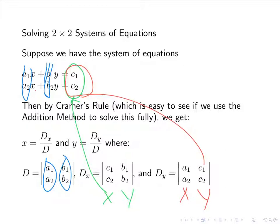So we replace whatever variable's column with the right-hand side of the equations, and every other variable keeps its original coefficients from D. For Dy, the y column becomes the right-hand side and the x column stays as it was. You'll see this more clearly when we get to three-by-three equations later.